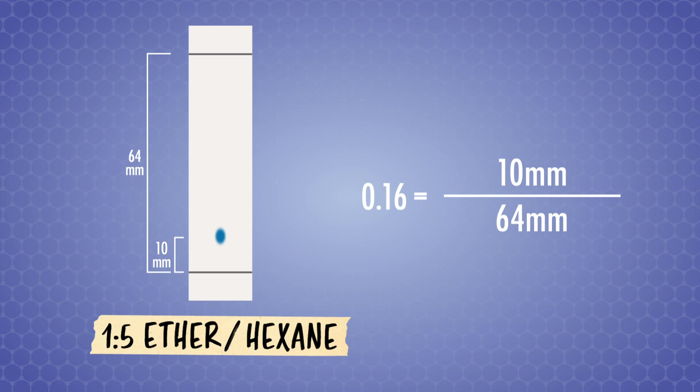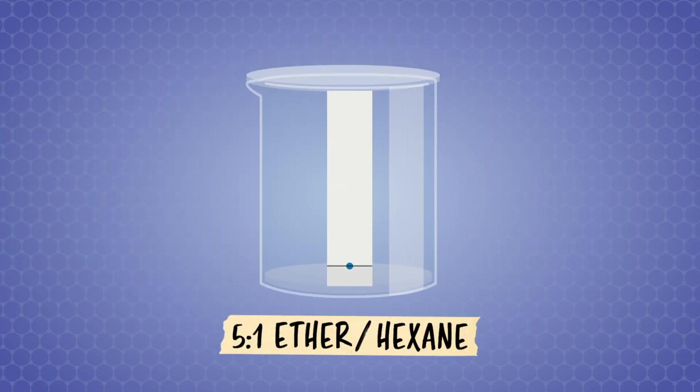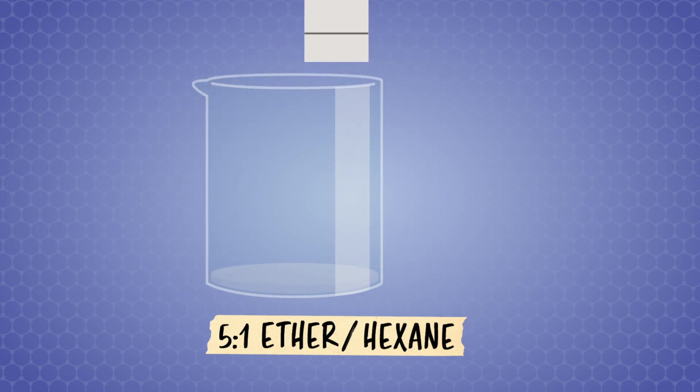The nonpolar solvent hexane is less effective at pulling polar organic compounds away from the polar stationary phase and moving them up the TLC plate. However, if we switch the ratio and increase the ether, the polar solvent in our mobile phase, we'll get different results. With a 5 to 1 ratio of ether to hexane, we'll expect polar organic compounds to interact to a greater extent with the more polar mobile phase, increasing the eluding power.